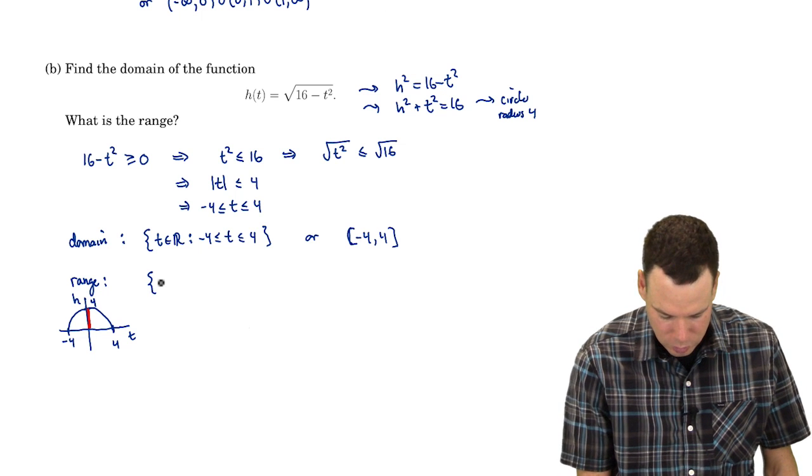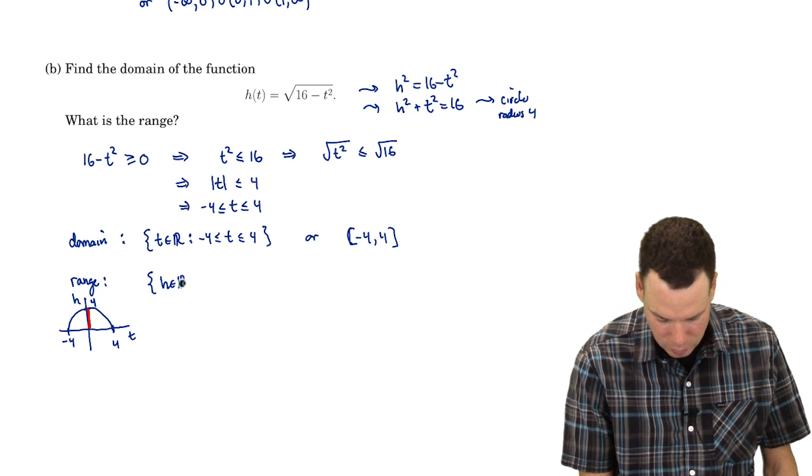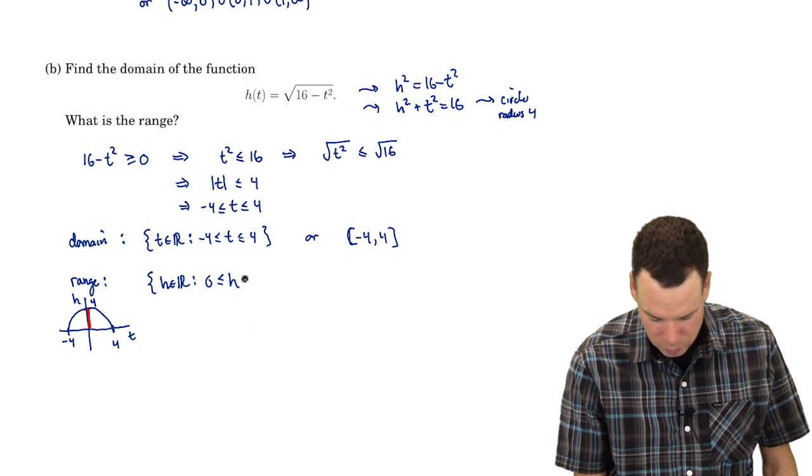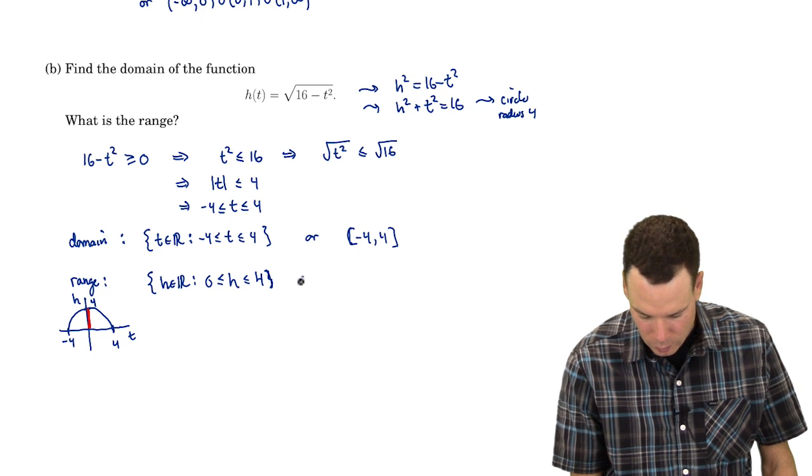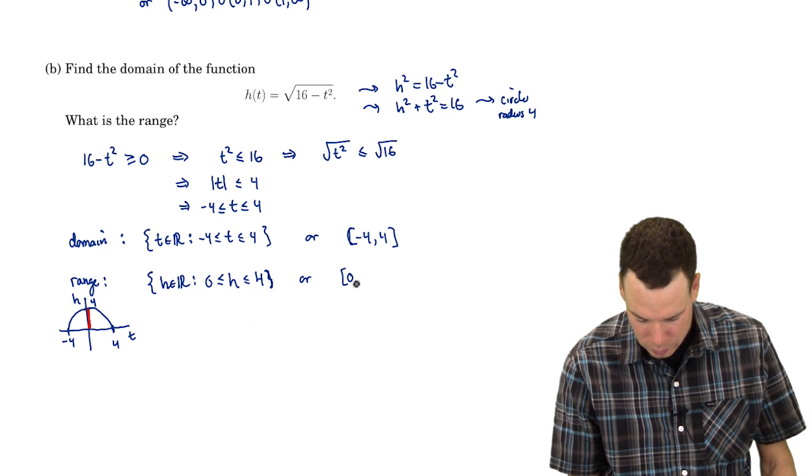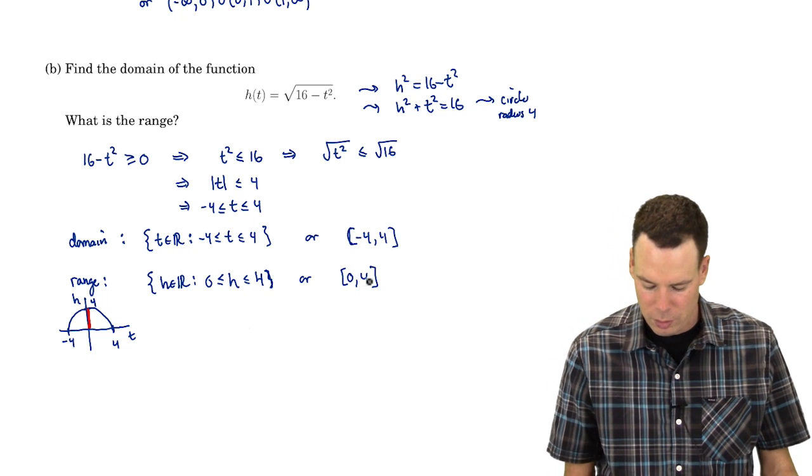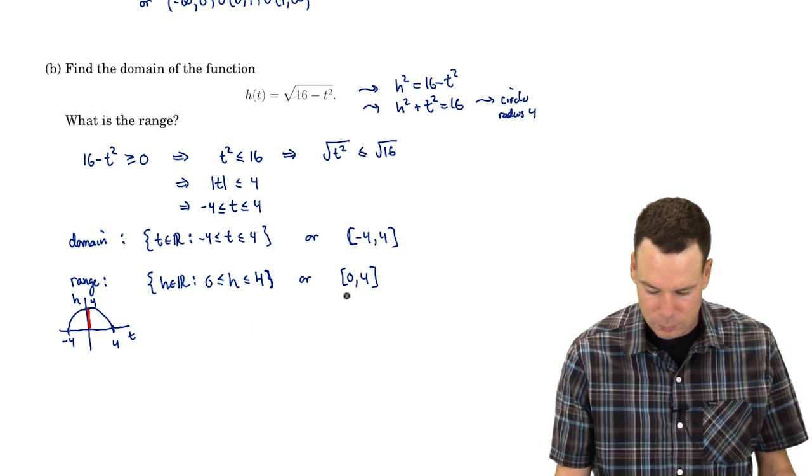The range is the set of all h values in R such that h is greater than or equal to 0 and less than or equal to 4. In terms of an interval, the range is [0, 4], including the endpoints.